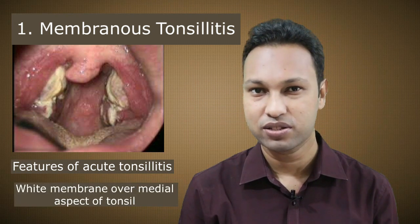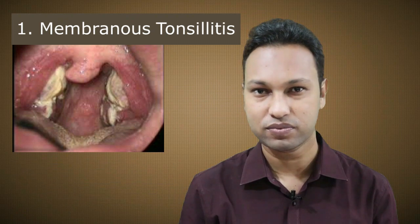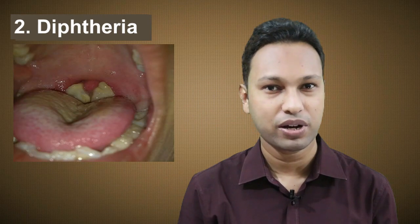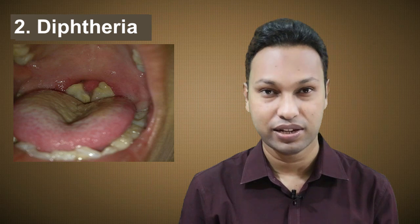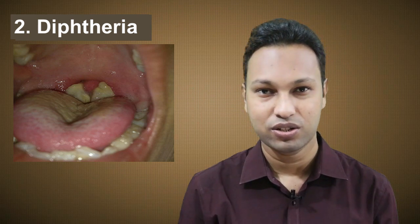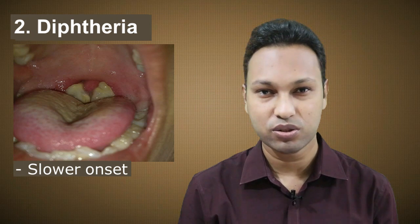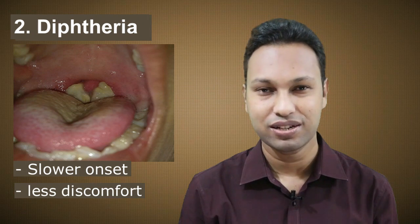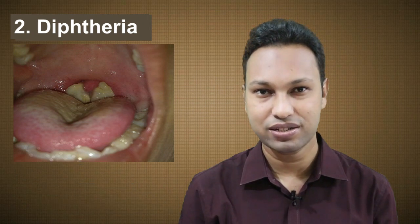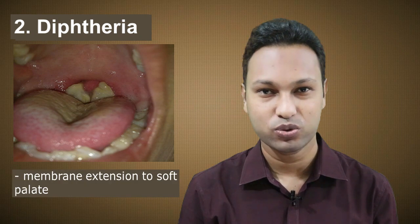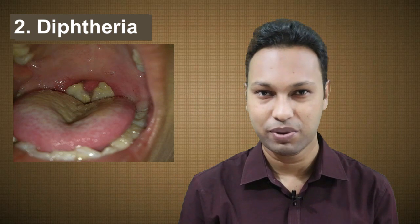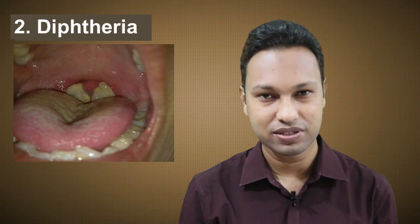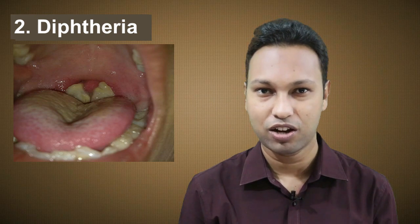The number two etiology is diphtheria. Diphtheria is caused by Corynebacterium diphtheriae. Unlike membranous tonsillitis, it is not abrupt in onset — it is slower in onset with less local discomfort. The membrane is dirty gray in color and extends beyond the tonsillar surface onto the soft palate. The membrane is adherent to the underlying surface, and removal of the membrane leaves a bleeding surface. Throat swab will show the causative organism.